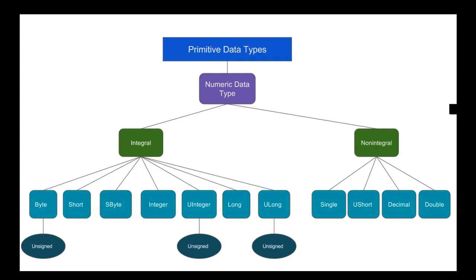The Long holds eight bytes of storage allocation and is a huge number — it ranges from approximately negative 9 trillion to positive 9 trillion 233 billion. The ULong also holds 8 bytes of storage allocation and is an even larger number, starting from zero to more than 18 trillion.